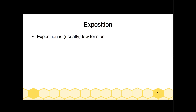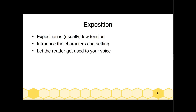The exposition is usually low tension. Sometimes you will introduce conflict at the very beginning of a story, in which case you might have periods of high tension already at that point. But generally, what you're doing in the exposition is introducing the characters, or at least the main character, introducing the setting, letting the reader see the world that exists for these people, see the characters inhabit that world, and letting the reader get used to your voice — how you are going to tell the story.